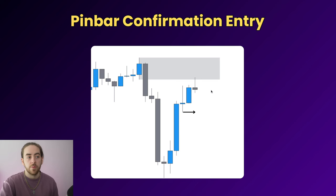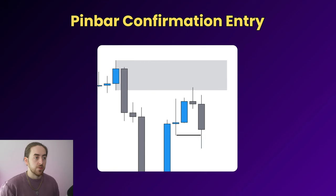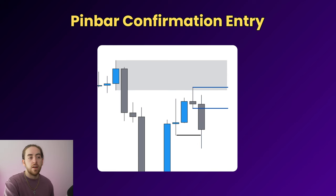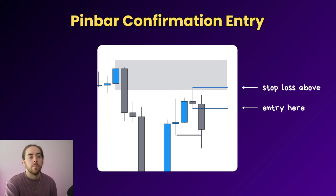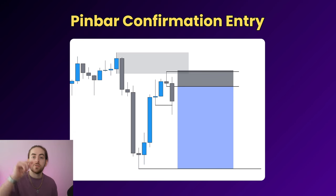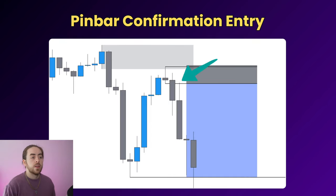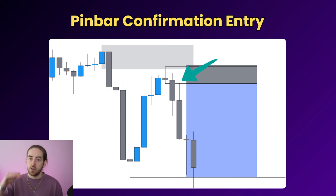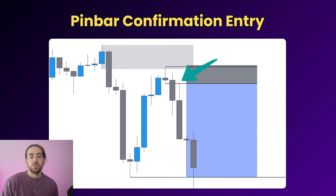We don't sell directly at the pin bar; instead we wait for this structure break to happen. We place an entry order at the bottom of the pin bar and the stop loss goes above the pin bar — target to the downside, entry on the pin bar low — then we wait for the market to retest the pin bar, forming our lower high, and sell down to move with the trend. As you can see, we come back, retest the pin bar, then get the sell trade and would be in and out of that for a profitable trade.